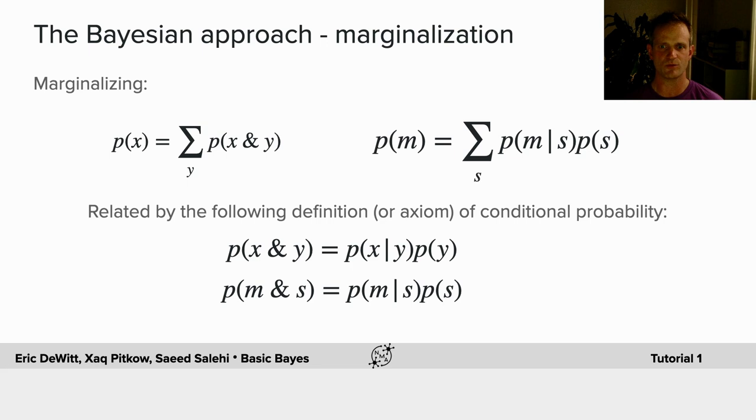For the probability of a measurement and a state, it's equal to the probability of the measurement given the state, times the probability of the state.